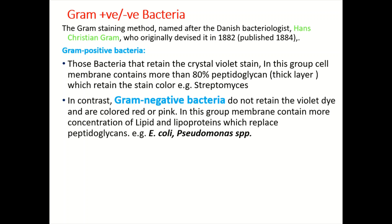In the case of gram negative bacteria, these bacteria do not retain the violet stain and are instead colored red or pink. In this group, the membrane contains a higher concentration of lipids and lipoproteins.